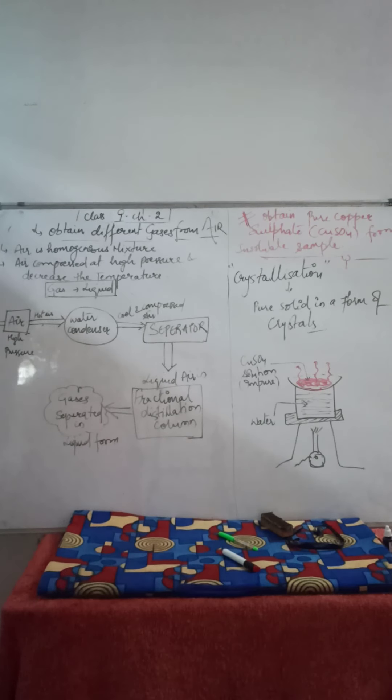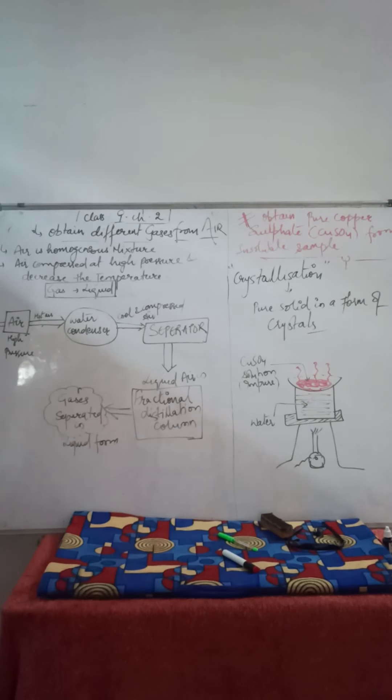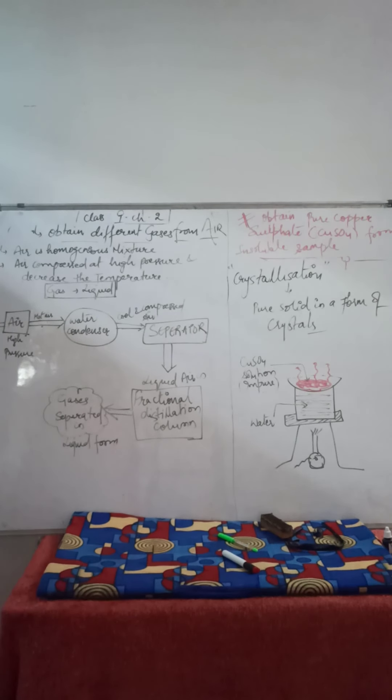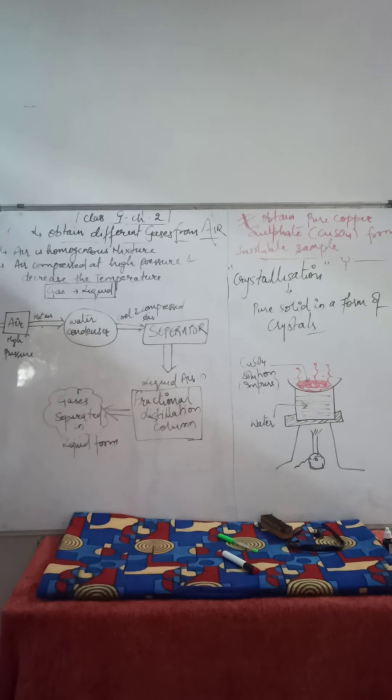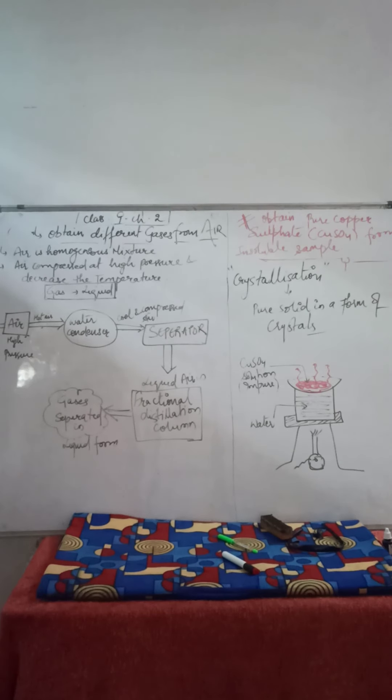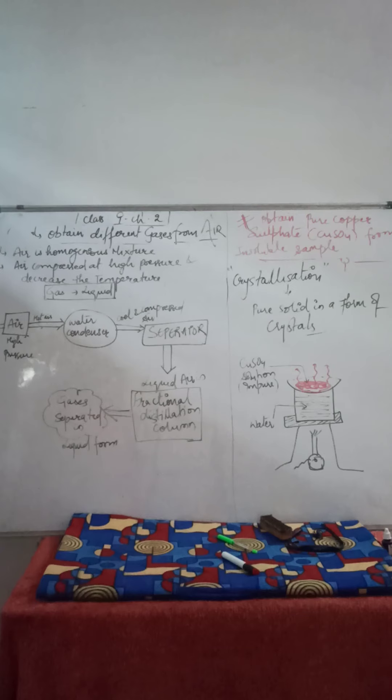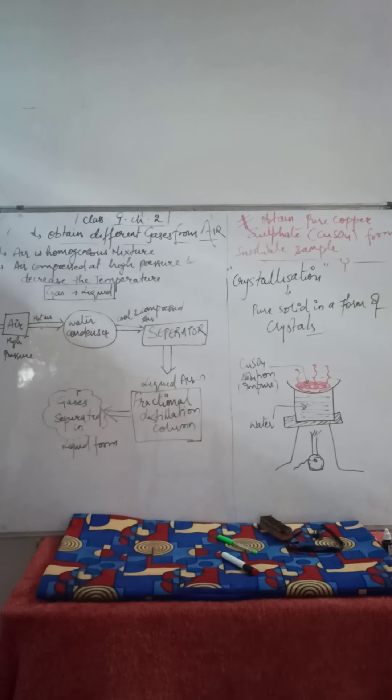As the boiling point of different gases present in air is different and very low, it is in minus. For oxygen, it is minus 183 degrees Celsius. For argon, it is different. For nitrogen, it is minus 186, minus 182. Different boiling points which are very low are present in air gases.